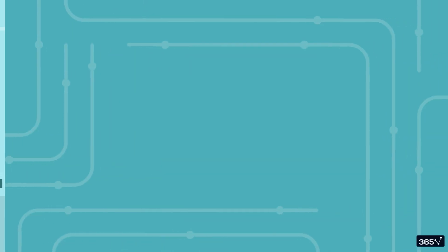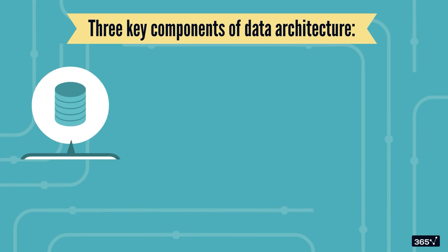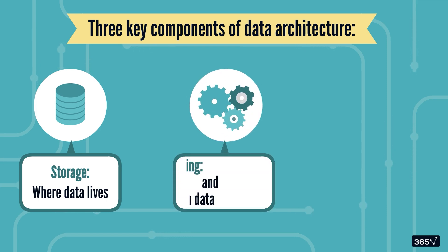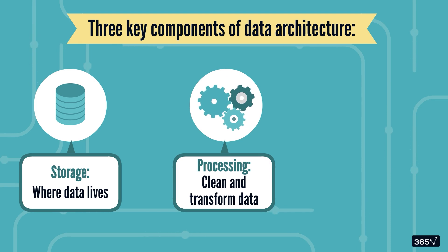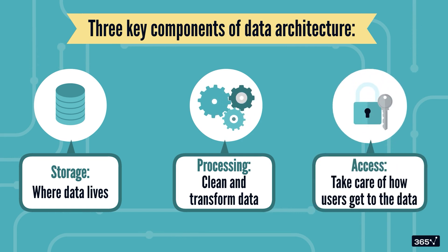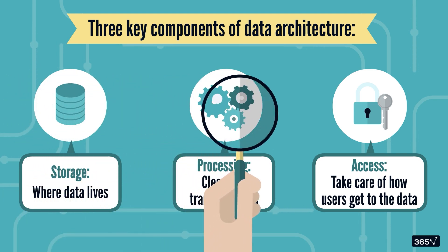Data architecture is the framework that ensures data gets where it needs to go efficiently and securely. At its core, it includes three main components. First, storage — this is where the data lives, with common examples being databases and data warehouses. Second, processing — this layer is responsible for cleaning and transforming data into something useful. And lastly, access — how people and systems get to that data. We'll go into the details of each in upcoming lessons.